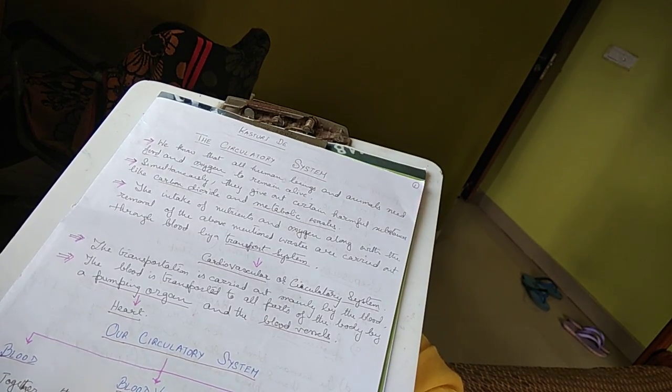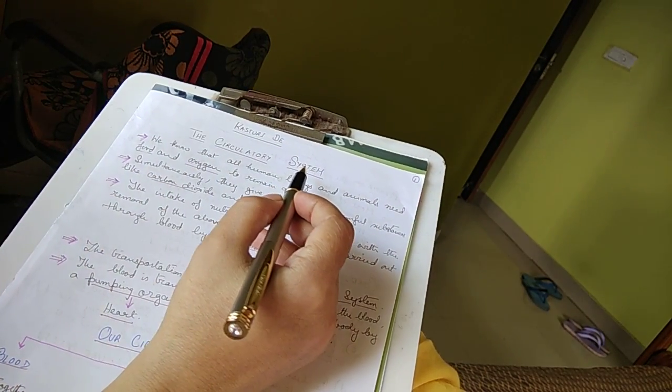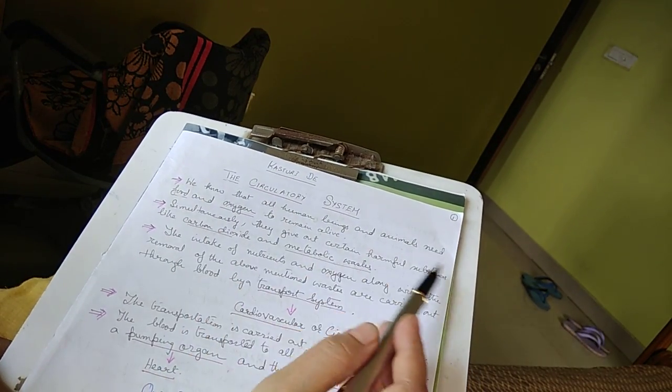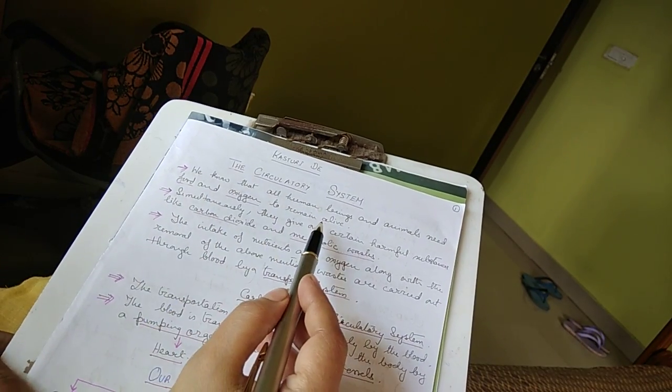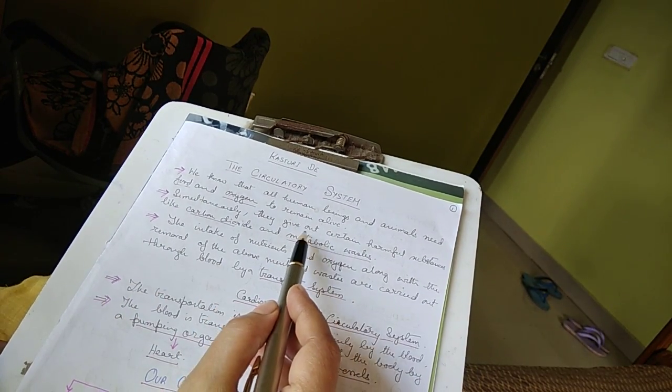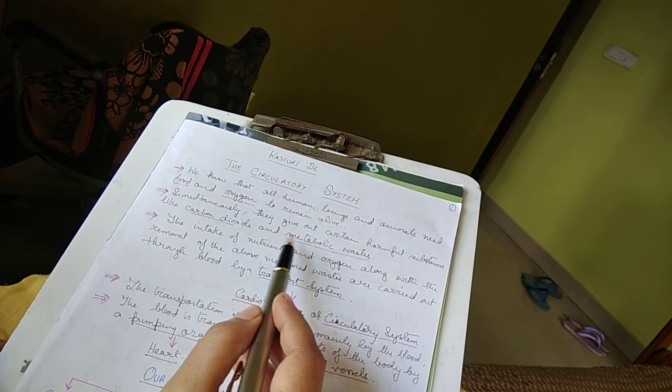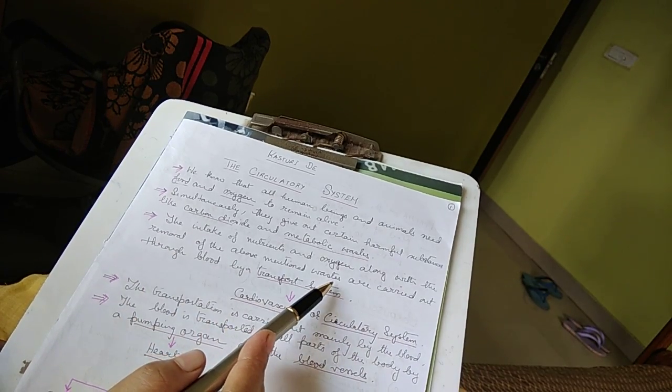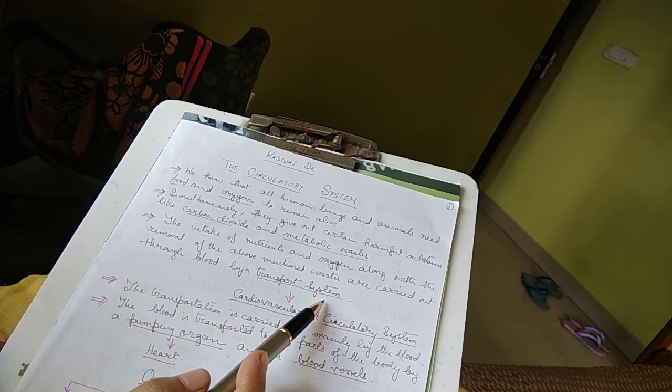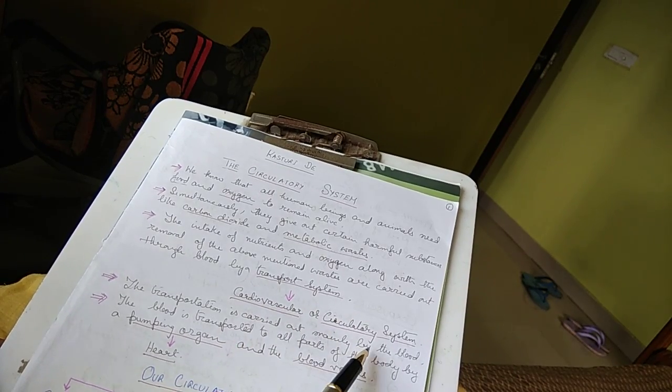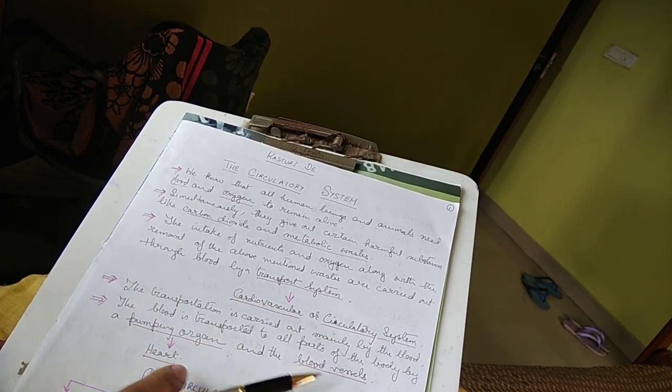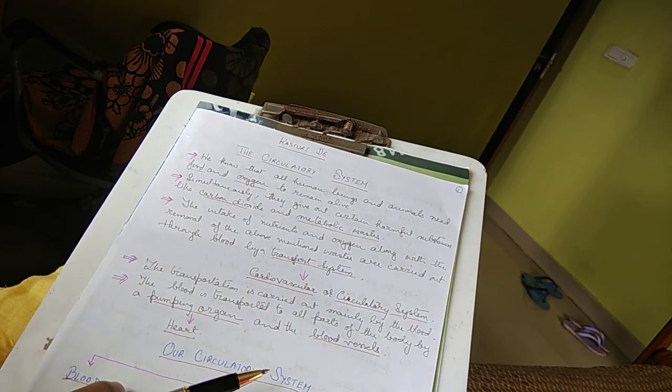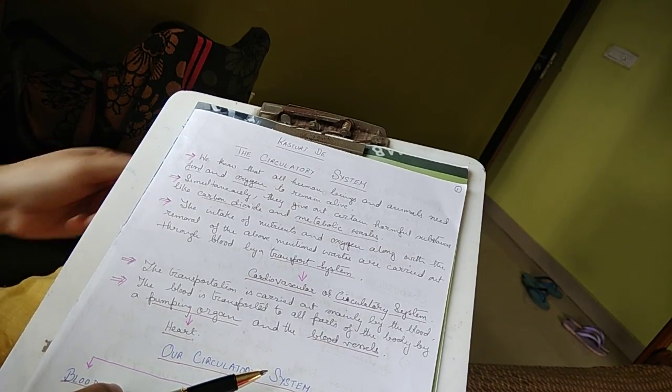Kasturideh is speaking on the circulatory system according to ICSE syllabus class 6. We know that all human beings and animals need food and oxygen to remain alive. Simultaneously, they give out certain harmful substances like carbon dioxide and metabolic wastes. The intake of nutrients and oxygen along with the removal of these wastes are carried out through blood by a transport system called cardiovascular system or circulatory system. The transportation is carried out mainly by the blood, which is transported to all parts of the body by the pumping organ that is heart and the blood vessels.